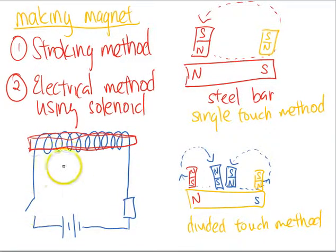Then we switch on the circuit. When we switch it on, the steel bar will become magnetized. We just switch it on for a while to magnetize the steel bar.